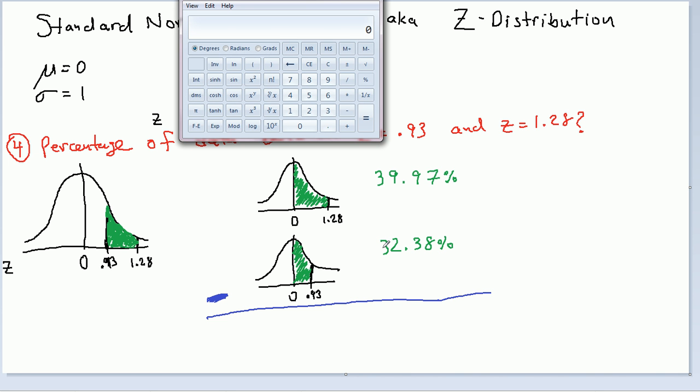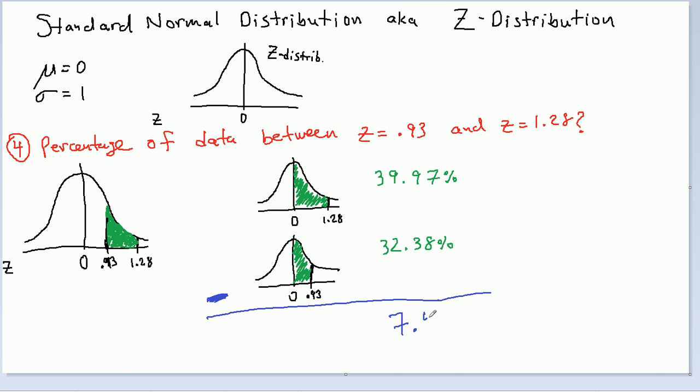So, let's pull up a calculator here quickly and subtract 0.3997, 0.3238. We'll get 7.59%. So, that is your answer. Now, why? So, this is where I want to spend more of my time.